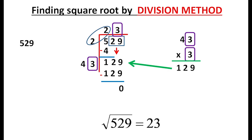Therefore, the square root of 529 is 23. The number 529 is grouped as two splices of two numbers to apply the division method.